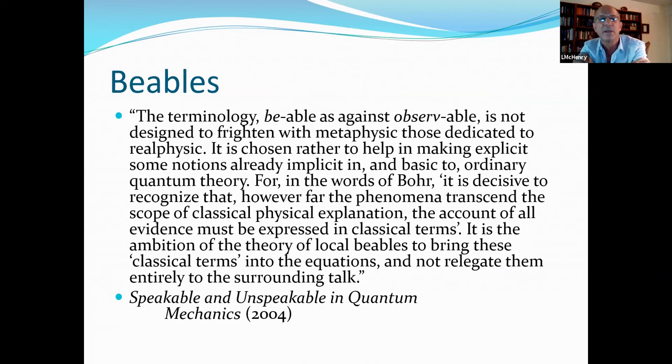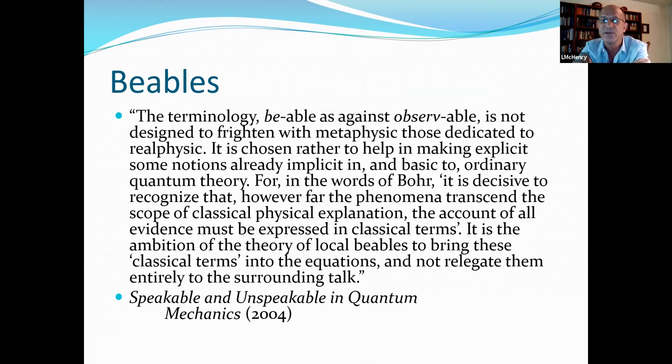So here's what Bell says in the speakable and unspeakable in quantum mechanics. The terminology beable as against observable is not designed to frighten with metaphysics, those dedicated to real physics. It is chosen rather to help in making explicit some notions already implicit in and basic to ordinary quantum theory. For in the words of Bohr, it is decisive to recognize that however far the phenomena transcend the scope of classical physical explanation, the account of all evidence must be expressed in classical terms. It is the ambition of the theory of local beables to bring these classical terms into the equations and not relegate them entirely to surrounding talk. So that, I take it, is Bell's rejection of orthodox quantum theory, the instrumentalist interpretation in favor of something that takes ontology seriously. And he calls this beables.